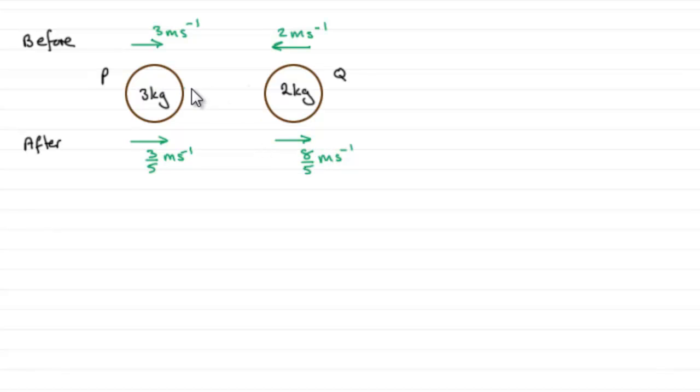So if we're going to try and find this impulse exerted on P by Q, it's going to be an impulse in this direction. I'm going to label it like this with this arrow and I'm going to call that impulse I. Now Q also receives an equal but opposite impulse. So to find out what I is, that impulse, you can either work with particle P or with particle Q.